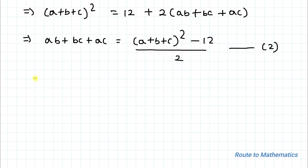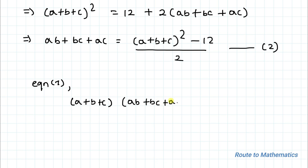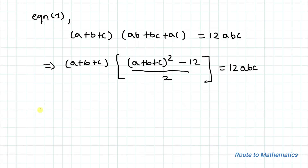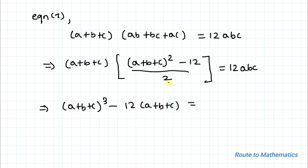Substituting equation 2 into equation 1: (a+b+c) × [(a+b+c)² − 12] / 2 = 12·abc. This simplifies to (a+b+c)³ − 12(a+b+c) = 24·abc. Taking the 2 to the right-hand side by cross multiplication gives us 24·abc.